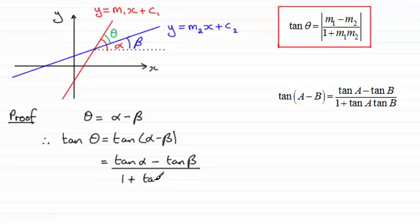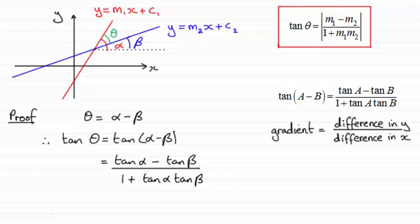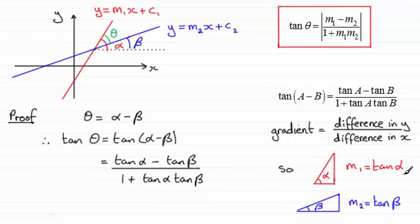Now turning to gradient, we know that gradient is the difference in y over the difference in x. So if I draw triangles representing alpha and beta, then the gradient m1 is equal to the difference in y, that's this side here, divided by the difference in x, that side there. Well this is the same as opposite over adjacent, which will be tan of angle alpha.